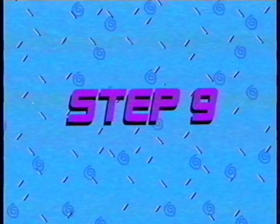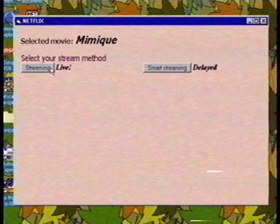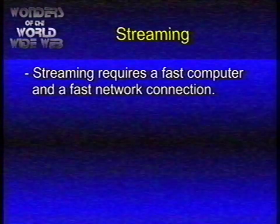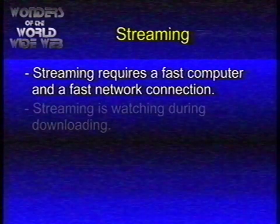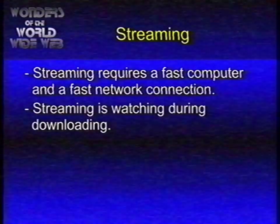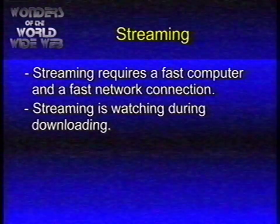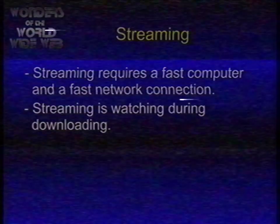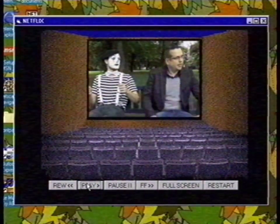Step 9: Now you see two options — streaming or smart streaming. Only use streaming if you have a powerful computer and are connected to a very fast network, like a university network. Streaming is watching while you download. Our connection isn't fast enough, but we'll still give you a demonstration. As you can see, the image quality is very low — we only see one image per second. But what does the video look like when we smart stream it? Well, we did that yesterday, and it looks way better. And if you click on the full screen button, you even get a better movie experience.